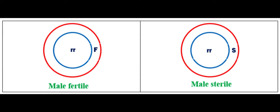In cytoplasmic male sterility, there are two types of cytoplasm: normal cytoplasm and sterile cytoplasm. Plants with normal cytoplasm produce male fertile plants while plants with sterile cytoplasm produce male sterile plants.